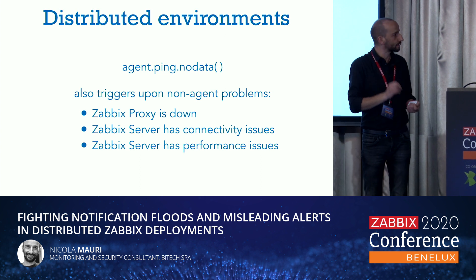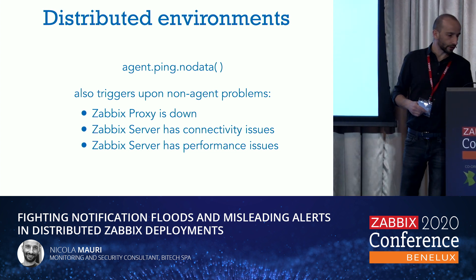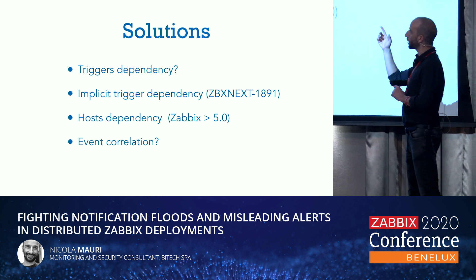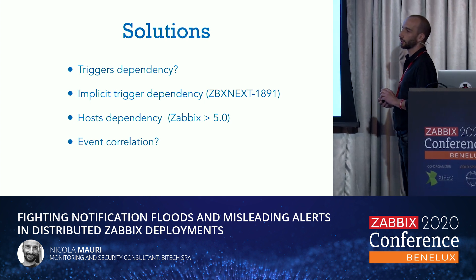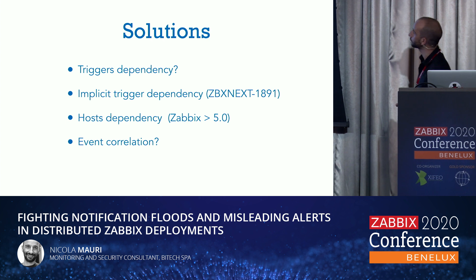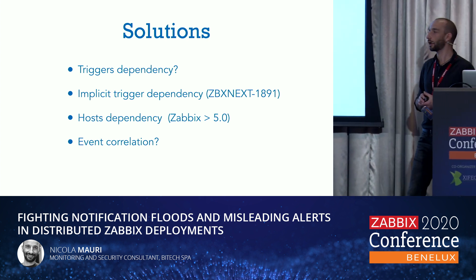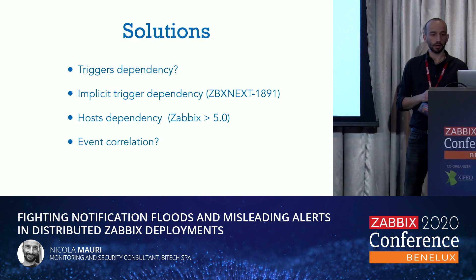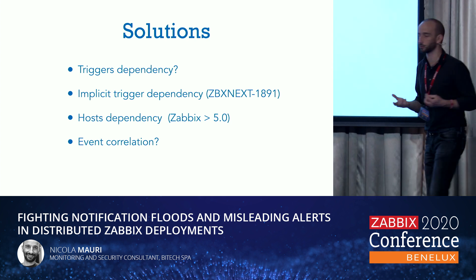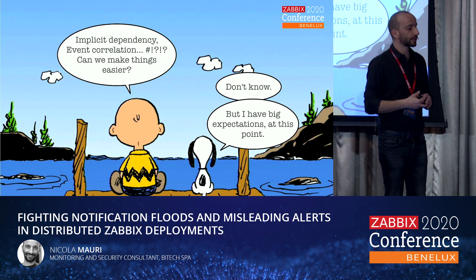Of course there are a lot of solutions to this. I would not recommend creating trigger dependencies, which requires a lot of manual work. There are a couple of Zabbix feature requests which are very interesting for the near future, and of course you can have fun with event correlation if you want. But this problem looks really simple — why do we have to deal with complex solutions? Can we make things easier? Yes, with Zabbix we can.